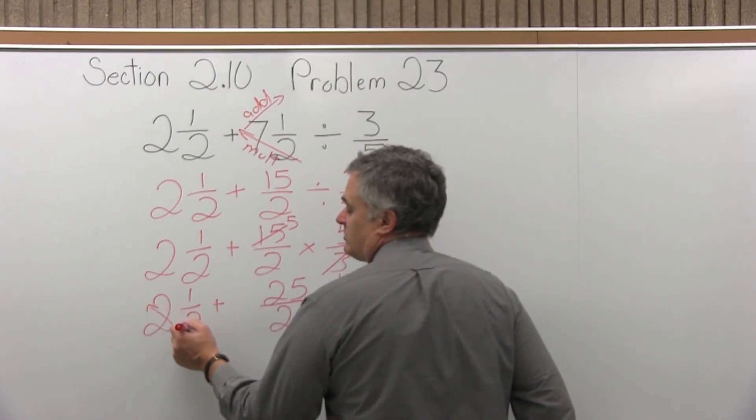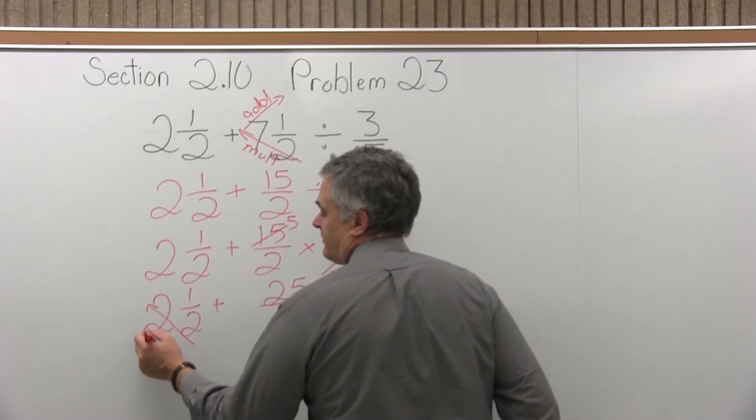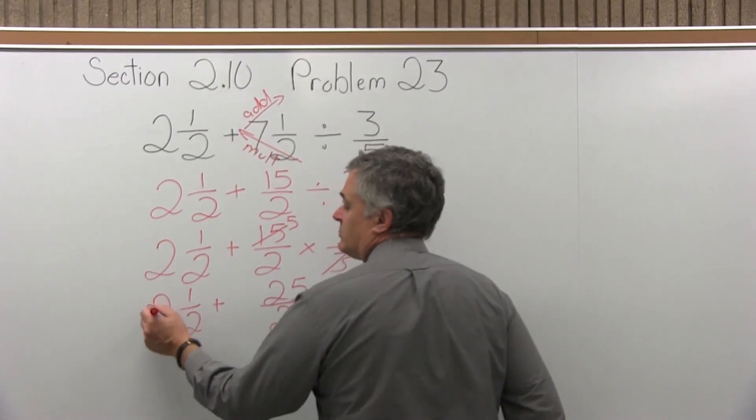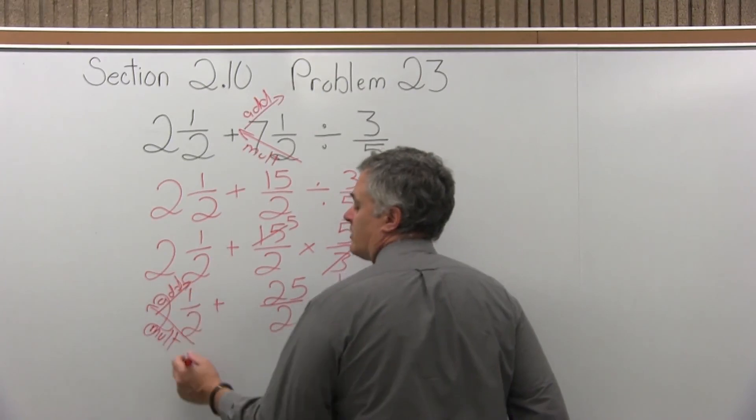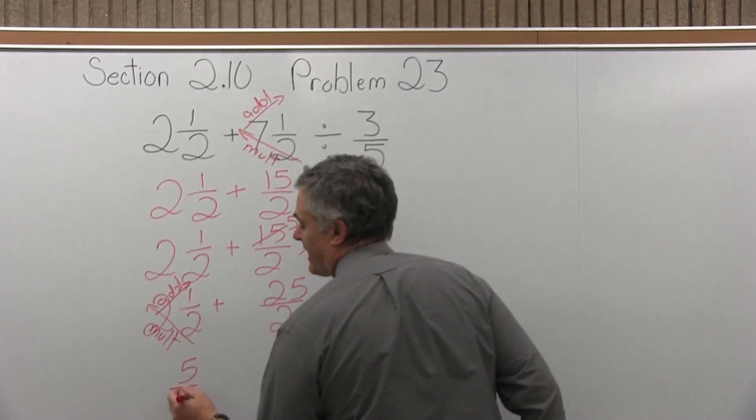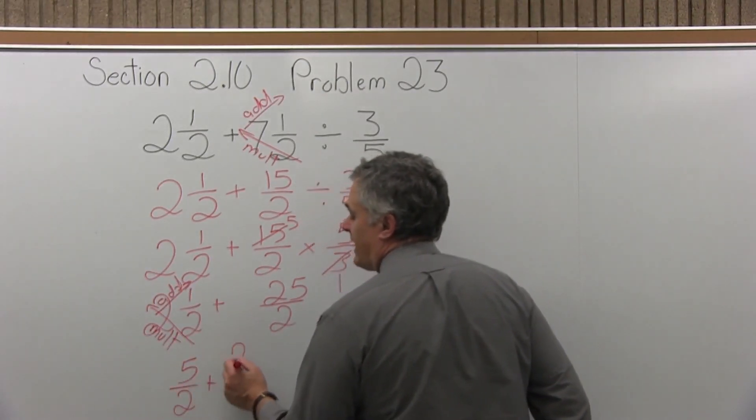Two times two, the denominator times number in front. I'll multiply. Two times two is four. Take the result I get and add to the numerator. Four plus one more is five. So I'll have five halves plus twenty-five halves.